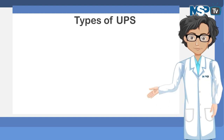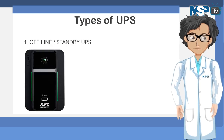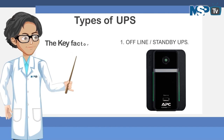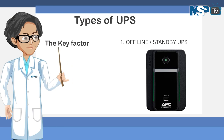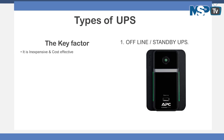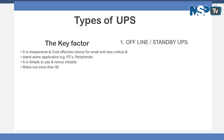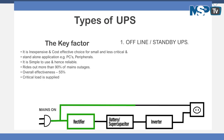There are mainly three types of UPS. The first is the offline or standby UPS — these are the most basic of the three, providing light surge protection and battery backup. Key factors: it is inexpensive and a cost-effective choice for small, less critical, and standalone applications such as PCs and peripherals. It is simple to use and hence reliable, and it rides out more than 90% of main outages. Overall effectiveness is about 55%.